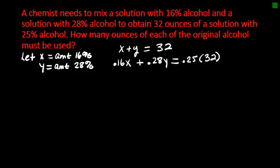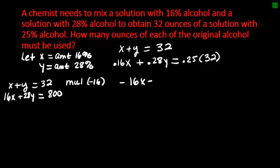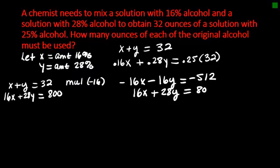Let me rewrite my system as X plus Y equals 32. I can get rid of decimals by moving each decimal two places to the right to get 16X plus 28Y. If I multiply 25 times 32, I'll get 800. Let's choose to get rid of the X. I'm going to multiply by negative 16: negative 16X minus 16Y equals negative 512. 16X plus 28Y equals 800. When I add these together, I get 12Y equals 288, or Y equals 24.